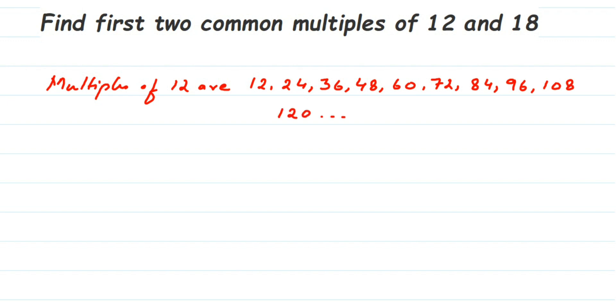I'm stopping till 12 10s are 120. You can go further if in case you don't get the common multiple - you can do 12 11s and proceed further. Now next, I'm going to write down the multiples of 18.